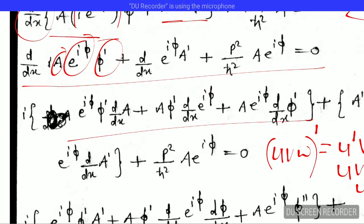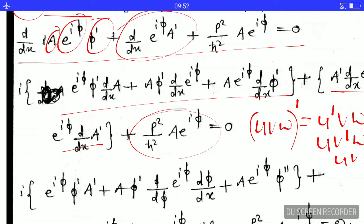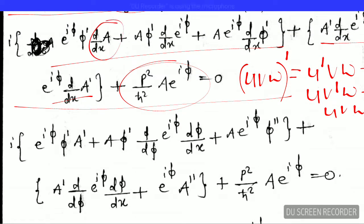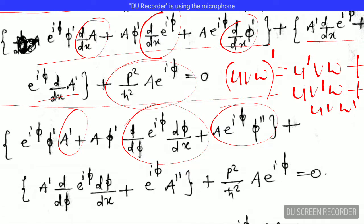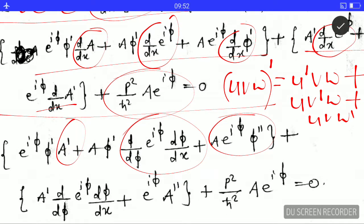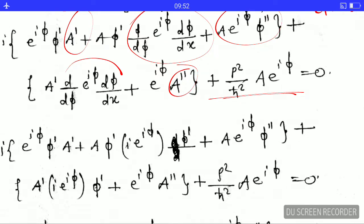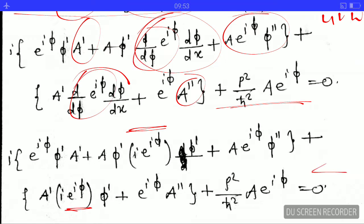In this part we again differentiate, using the chain rule where needed. A′ denotes dA/dx, and adding another prime gives A″. Applying the chain rule for the phase terms step by step, we solve each part, and the equation becomes the expanded form shown here.